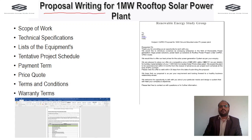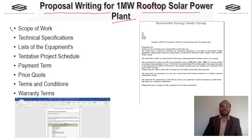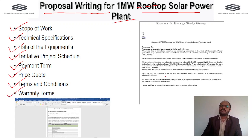Next is proposal writing for a one megawatt solar rooftop and ground mounted solar power plant. We cover what parameters to include in the proposal for a ground mounted project: scope of work, technical specifications, list of equipment, tentative project schedule, payment terms, price quote, terms and conditions, and warranty terms — drafted in Word document format.